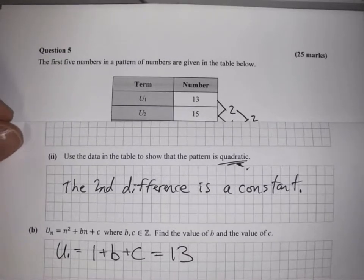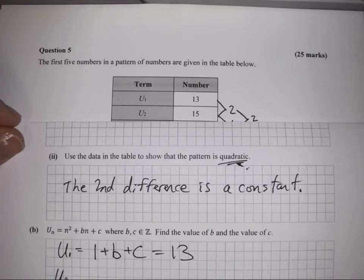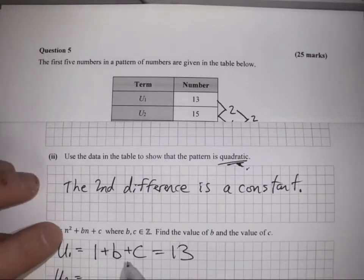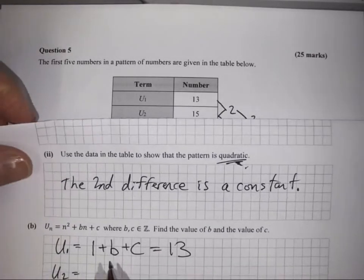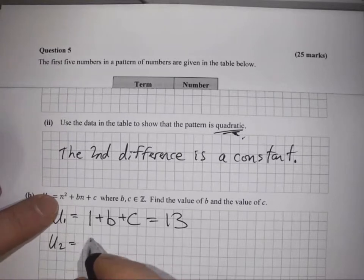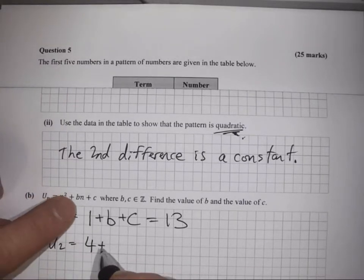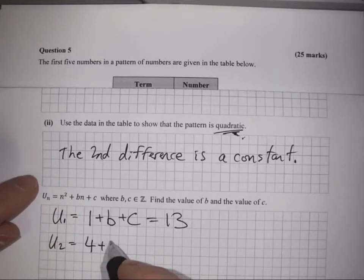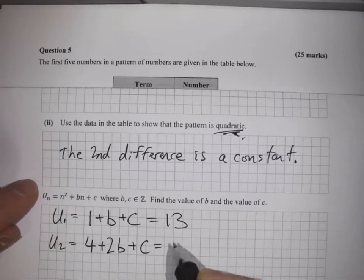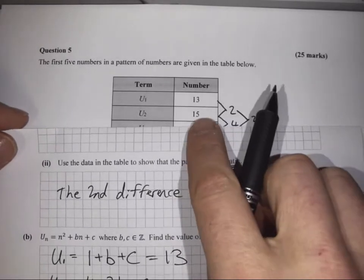We can do a similar trick: U₂ equals 2 squared—that's 4—and b times 2 is 2b, so that's 4 plus 2b plus c equals 15.